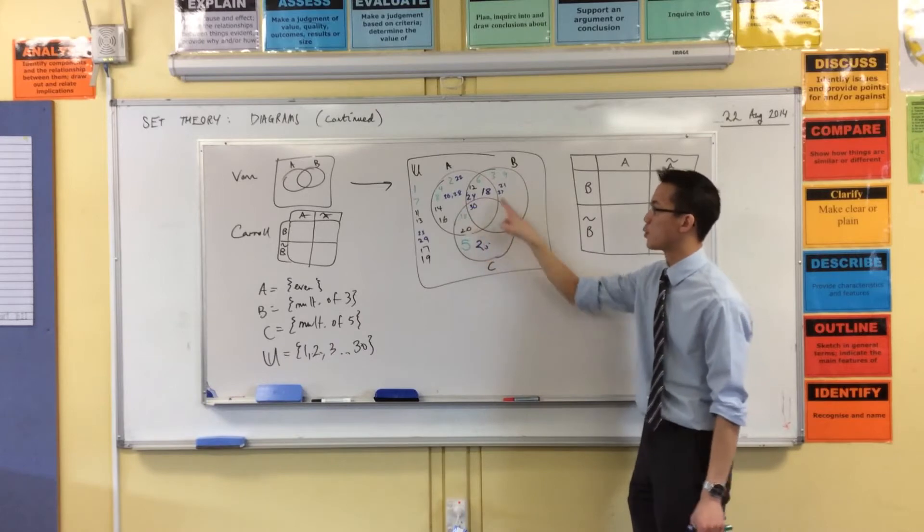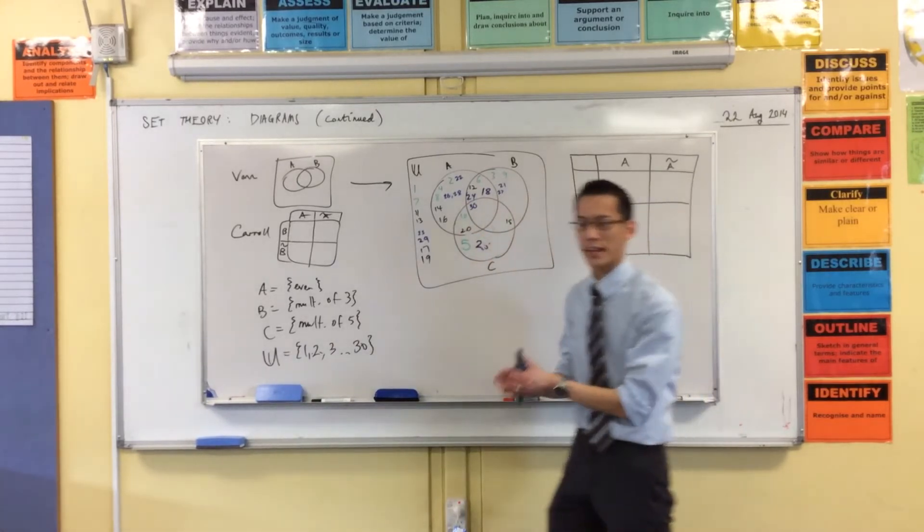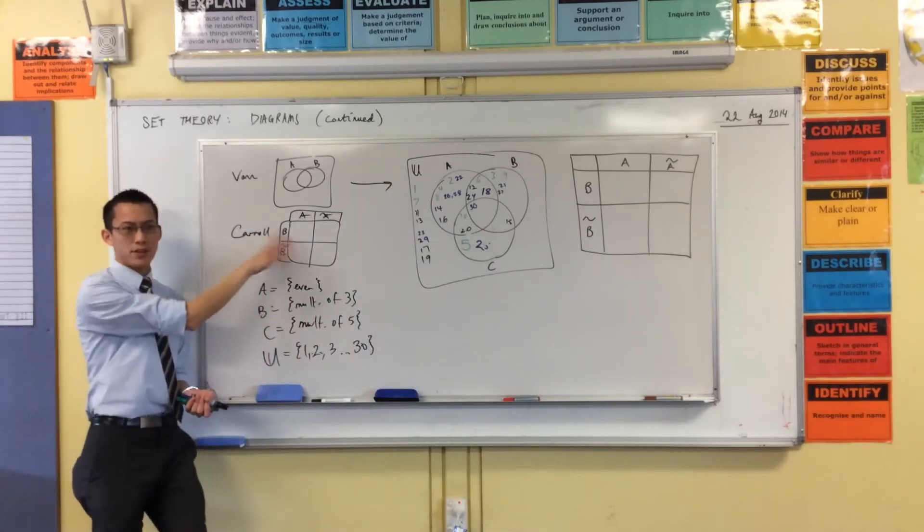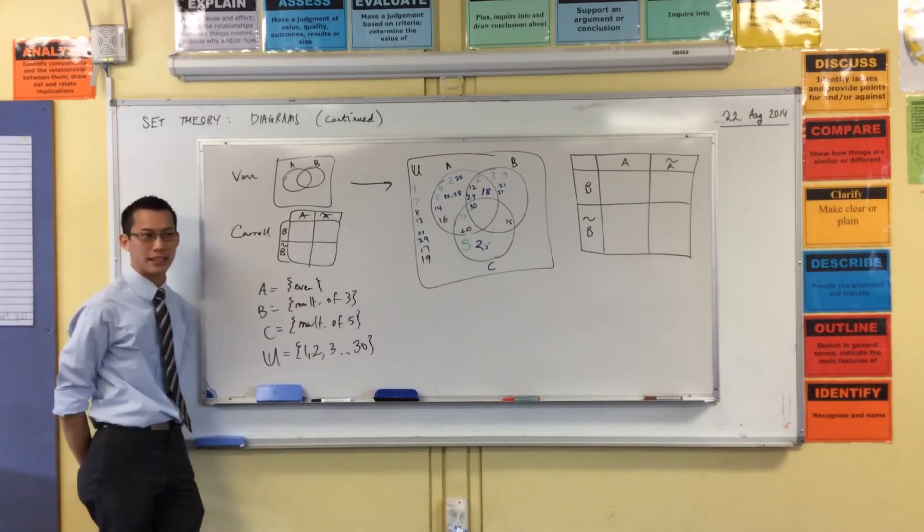And then you can see these other patterns which you recognized before. Look, you're going to get multiples of 15 in here, because it's 3 and 5. Anyway, no problem. But then you think about this. We have this Carroll diagram for two sets, and that works pretty happily, right?